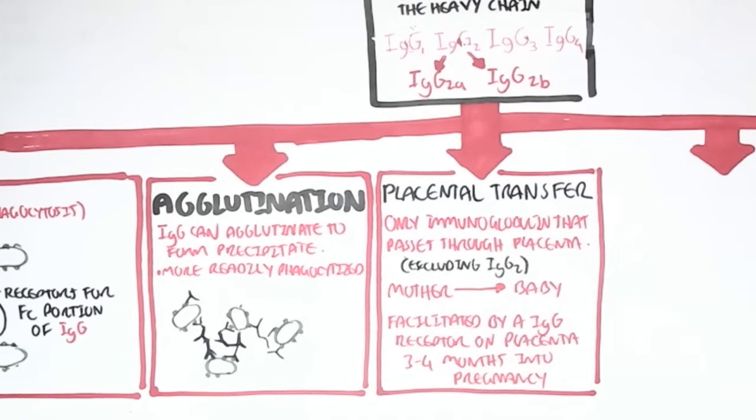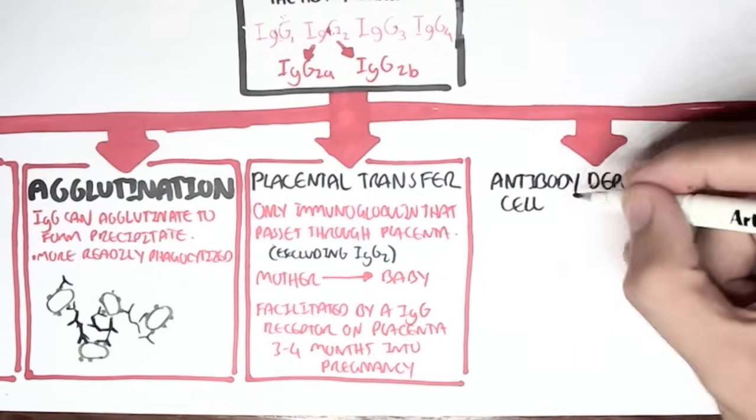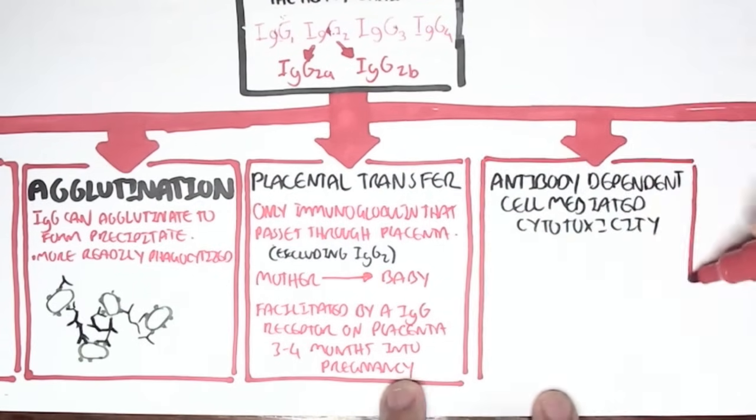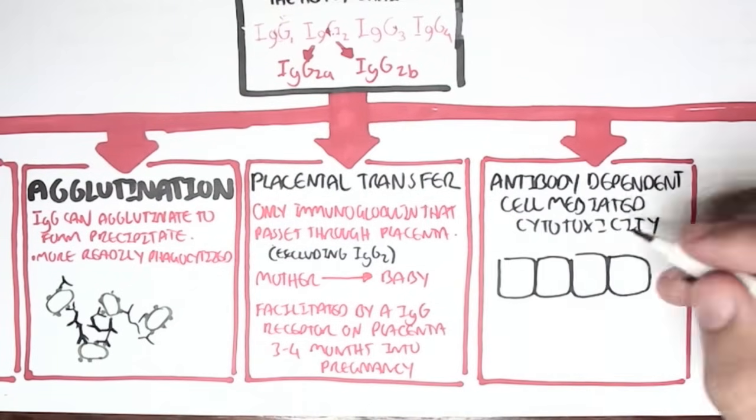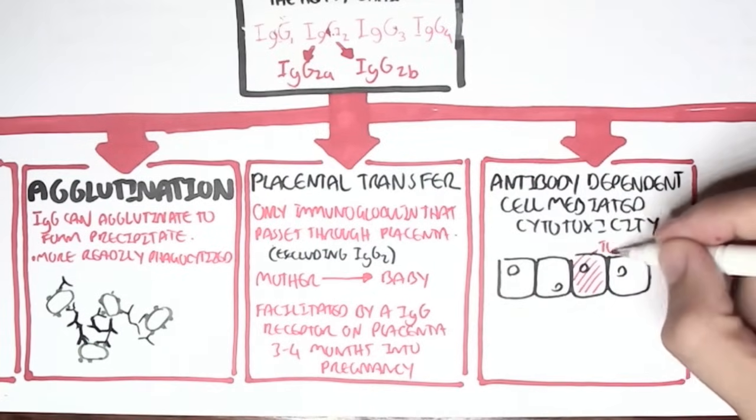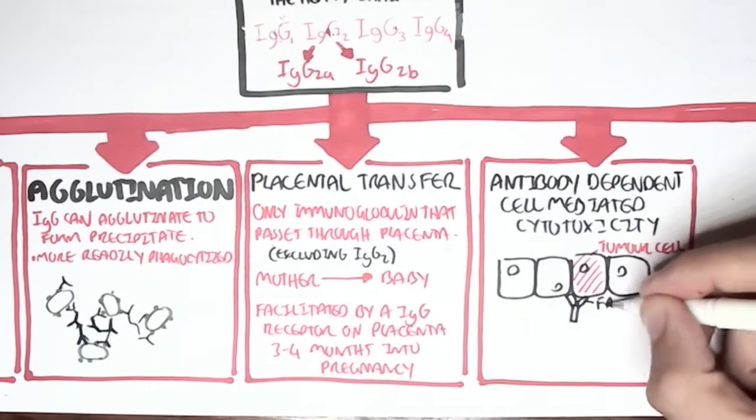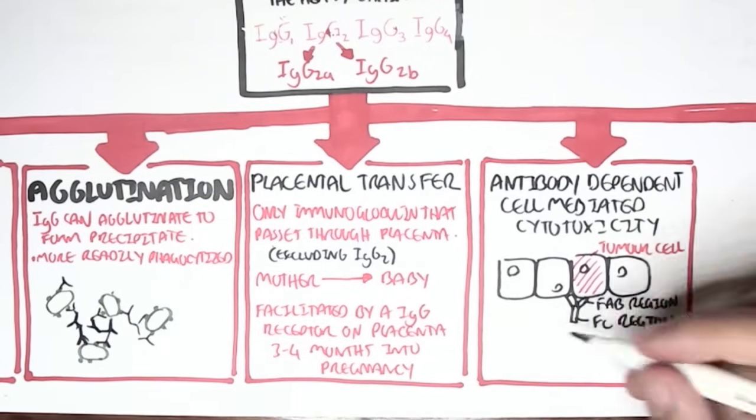Another thing antibodies such as IgG can do is what's called antibody-dependent cell-mediated cytotoxicity. And this is sort of similar to opsonization, in a way, in that if you have just cells and then there is an abnormal cell amongst these cells, such as a tumor cell.